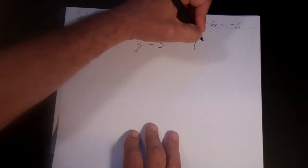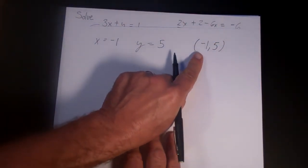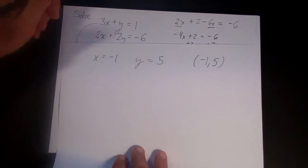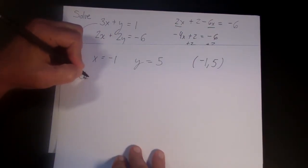We write it as an ordered pair, minus 1 comma 5, where the first number is going to be the x value and the second one the y value. To check it we are going to plug this into both equations.